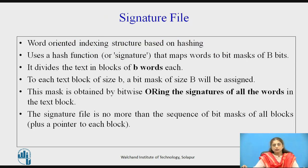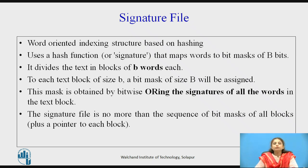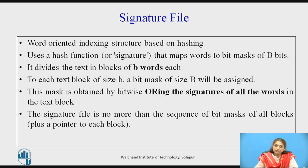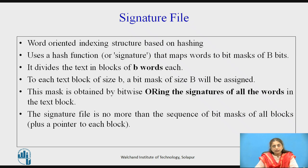So what is a signature file? It is a word-oriented structure based on hashing. We are going to use a hash function to get a signature, and this hash function will map words to the bit mask of b bits. The steps are: first, divide the text block into b words each; then apply the bit mask for the words present in that text; do the ORing of the signatures of all the words present in one text block — this will be the signature for that block. Find the signature for every block and write them in a sequence — that is called the signature file.